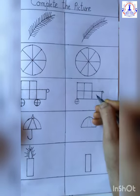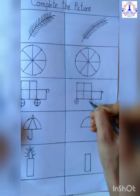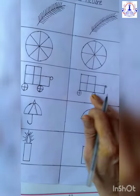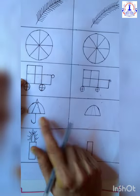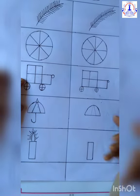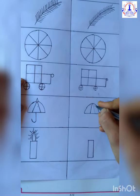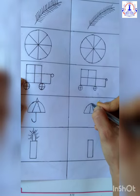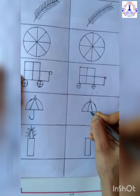Now U for umbrella. This is umbrella, what is missing over here? Yes, inside there is a triangle missing. Let's do it. This triangle. Up here there is one more triangle like this and handle is also missing. That's it, your umbrella picture is complete now.